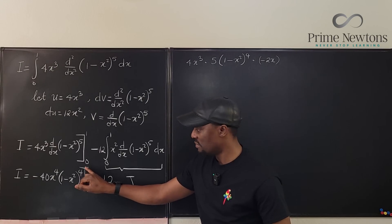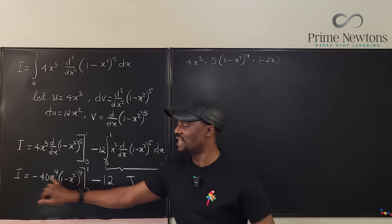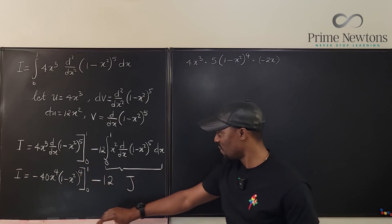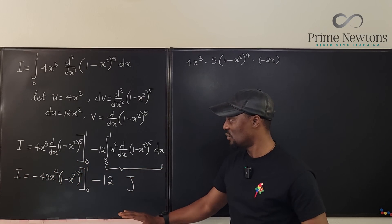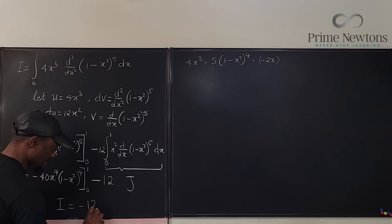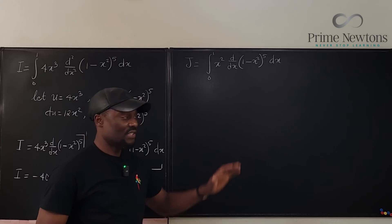Let's plug in 1. Well if you plug in 1 here it's going to be 1 minus 1 which is 0. 0 times anything is 0. So you notice that all of this will disappear so that what is left is just negative 12J. Is equal to negative 12J. So all we have to do is focus on J.